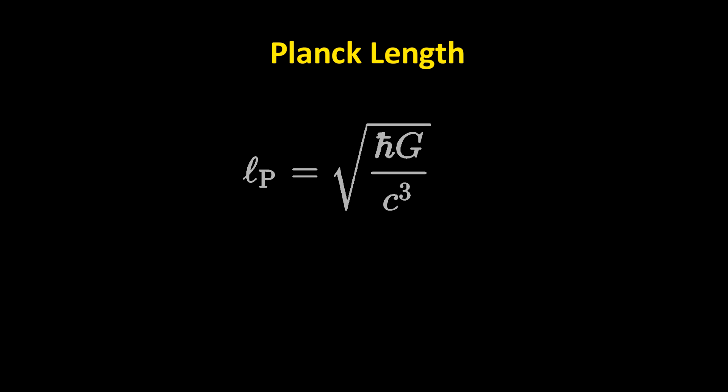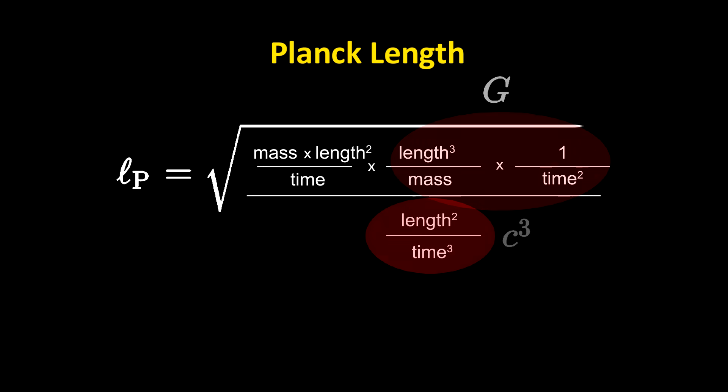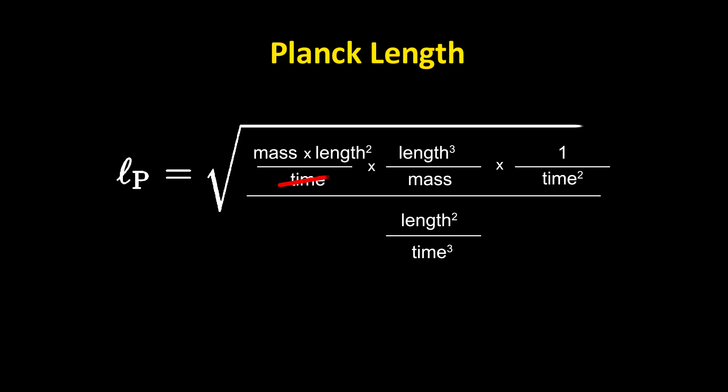By taking different mathematical combinations of these constants, and reducing their units, you can get a length. So as you can see here, if we take the units of the three fundamental constants, and manipulate them mathematically, we can come up with a length, L sub p, which is the Planck length.